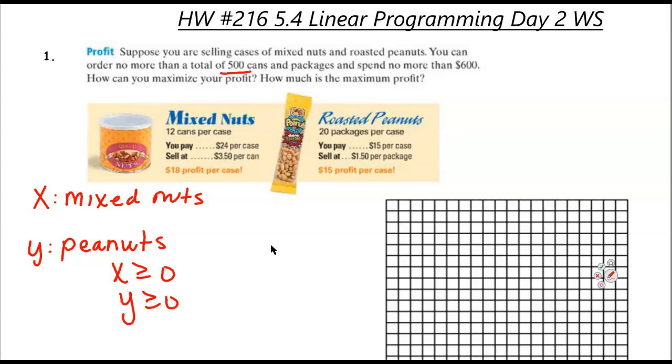First of all, we have a constraint of 500 for cans and packages. So if I buy cases of mixed nuts, remember there's 12 cans per case. So that's going to be 12X plus 20Y has to be less than or equal to 500. Maybe that's shelf space or what I'm limited to sell at wherever I'm selling my nuts and peanuts.